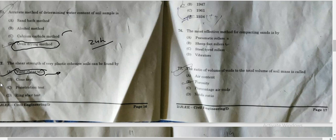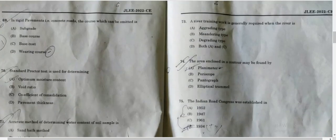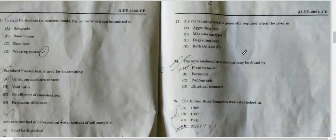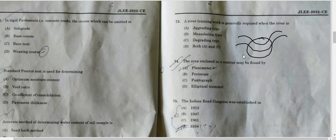Next, question number 73: river training work is generally adopted. The correct answer is meandering type. What is meandering type? Meandering is considered as a wave phenomenon. A meander forms when moving water of the stream erodes the outer banks and widens its valley, and the inner part of the river has less energy and deposits sediment. That means the river bank on the outer part is eroded and the inner part is extended, creating a depression. So for meandering type rivers, we provide preventive measures. That's why river training work is generally required for meandering type.